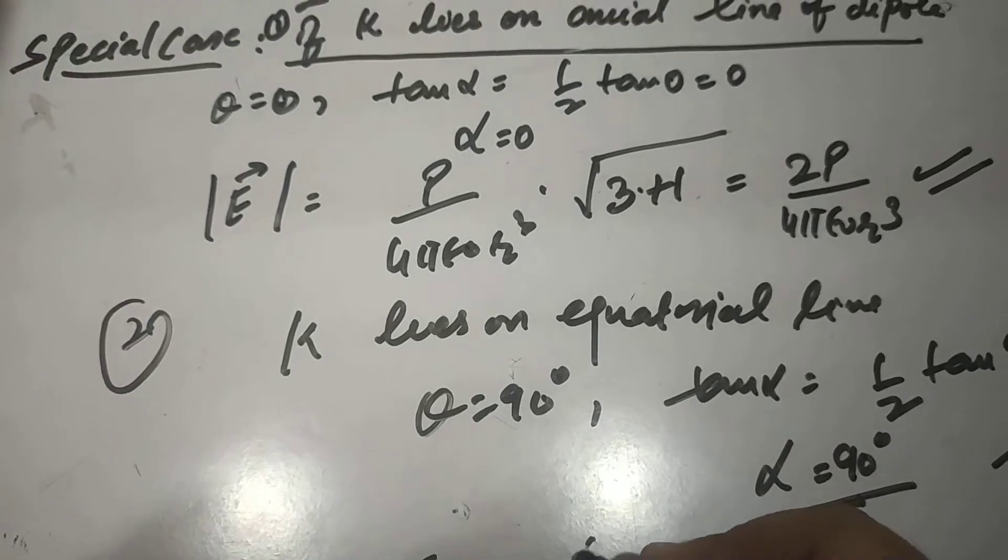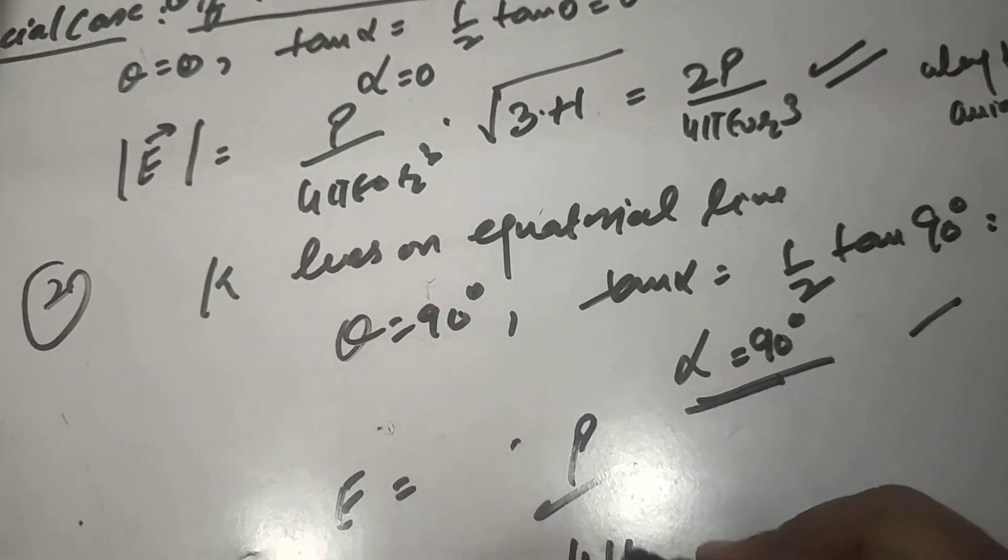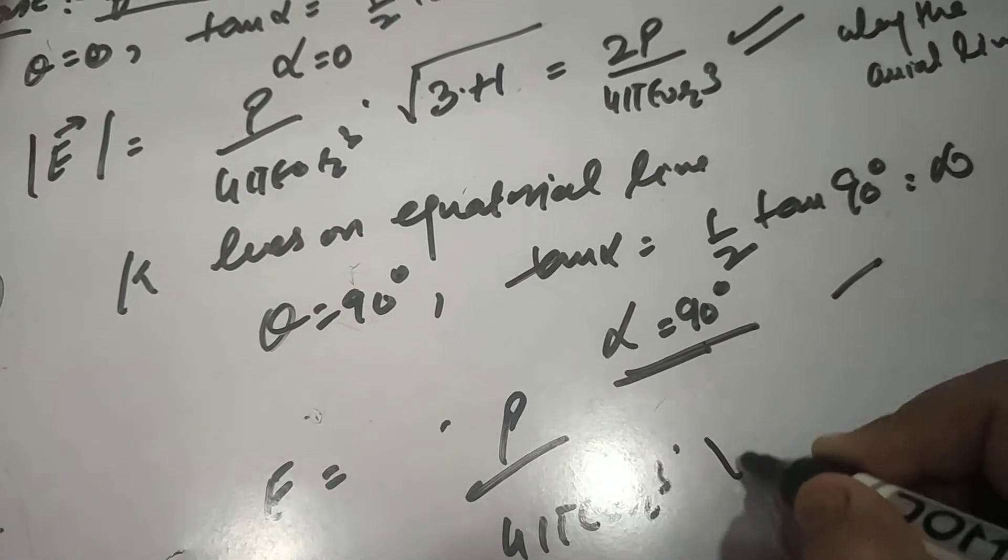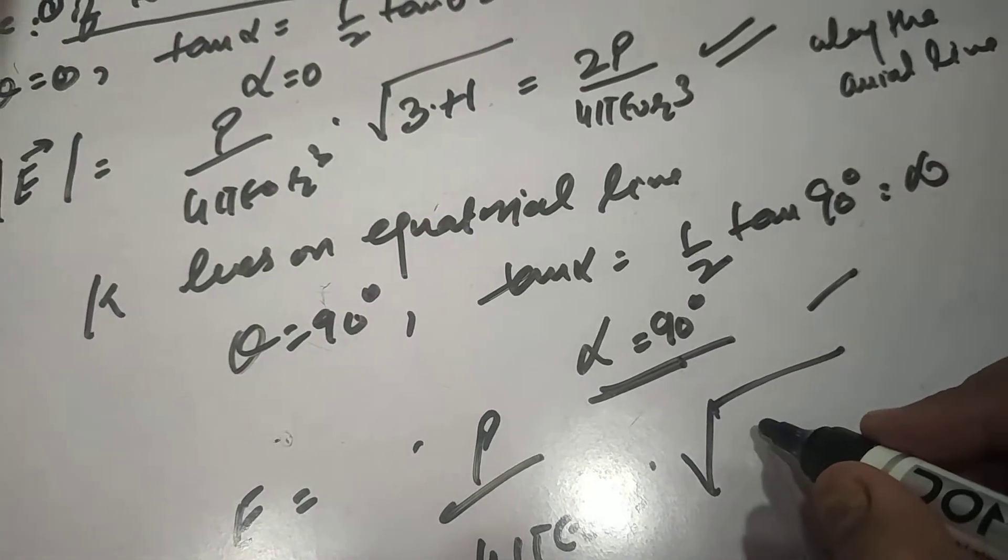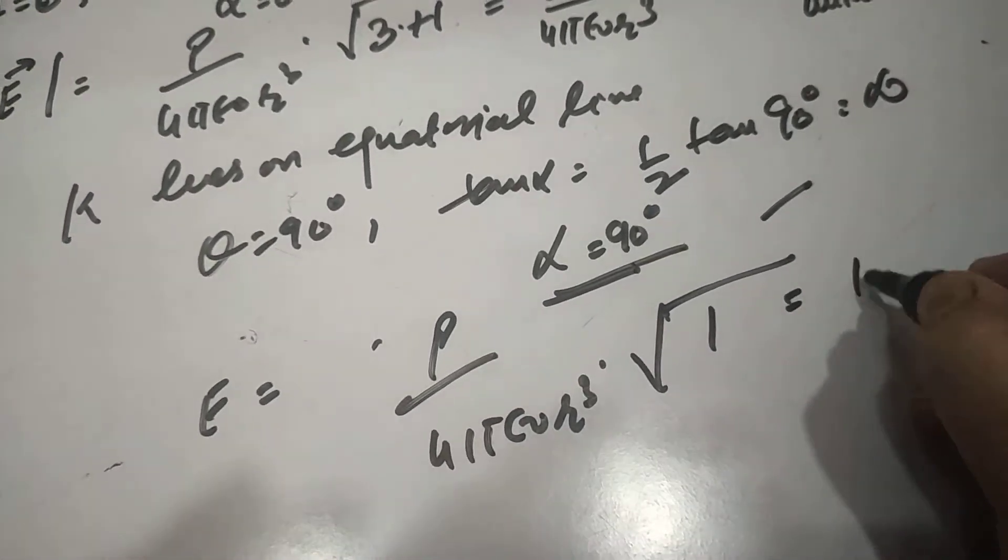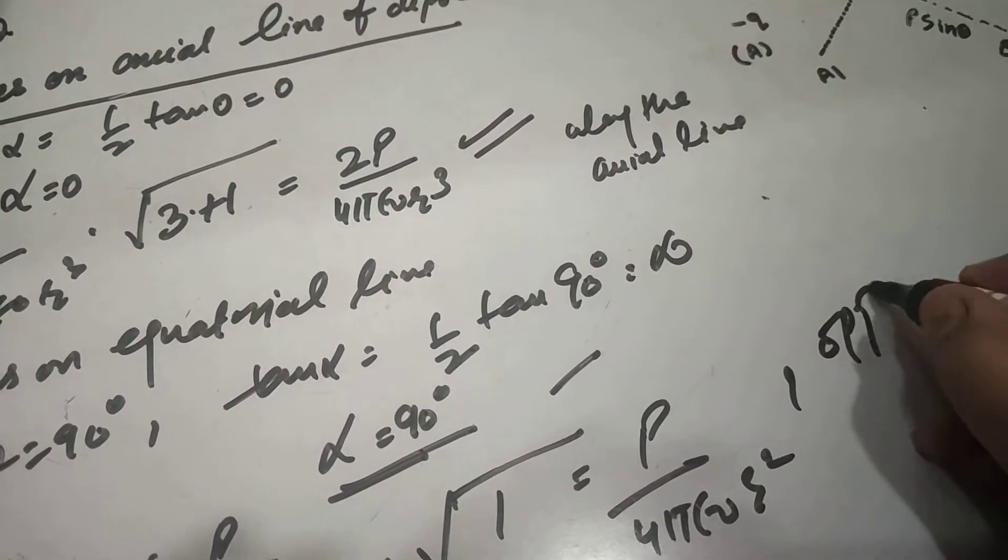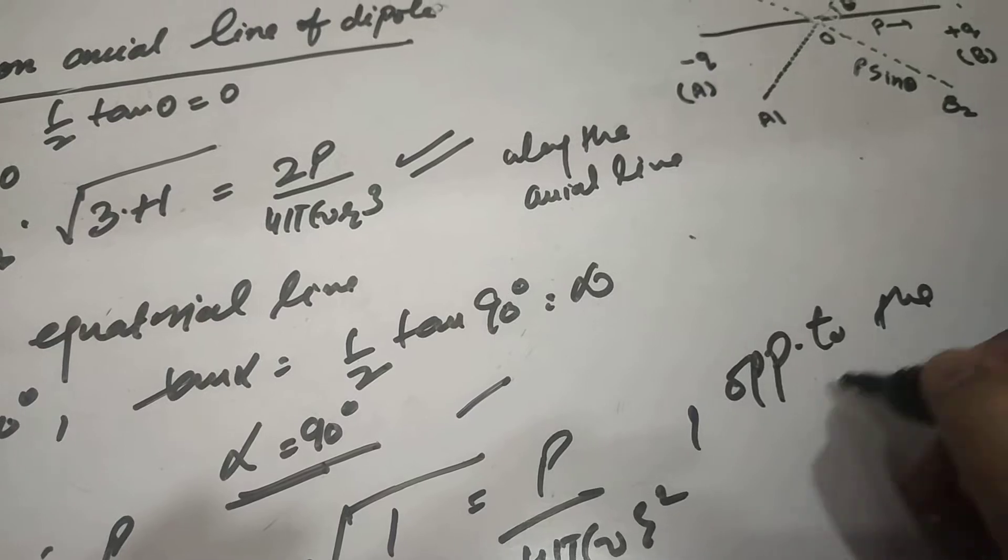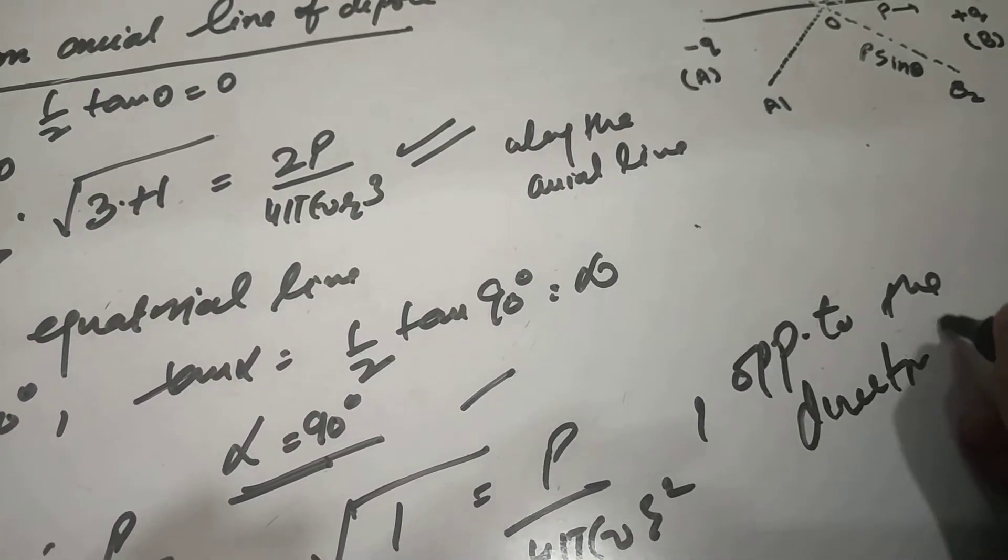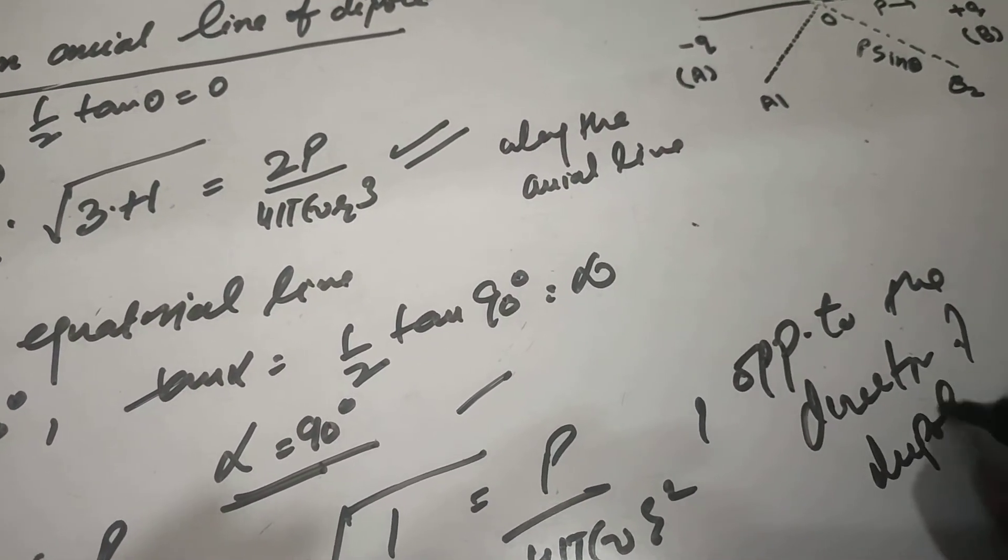And the value of E can be calculated. P upon 4 pi epsilon 0 R cube root 3. Cos 90 is 0, so 1. So that is P upon 4 pi epsilon 0 R cube, and opposite to the direction of dipole.